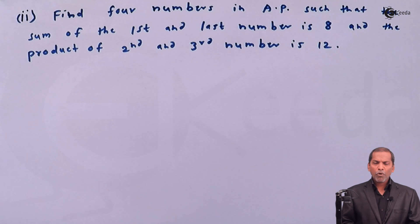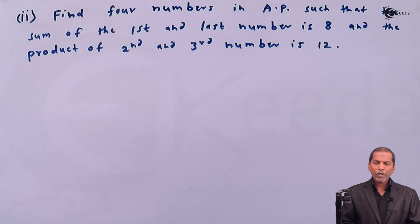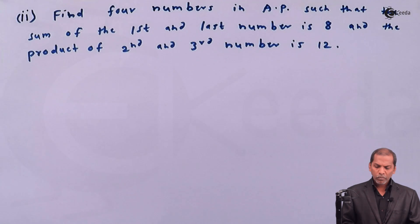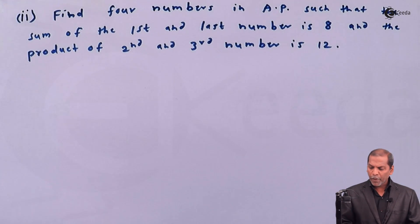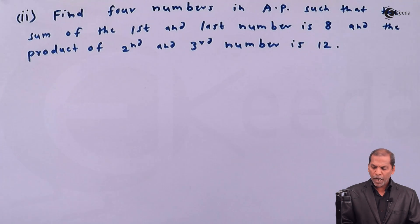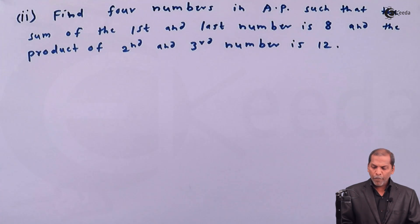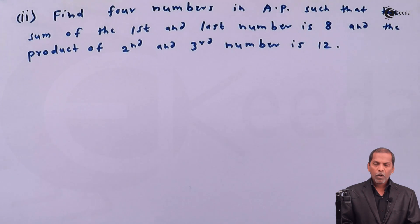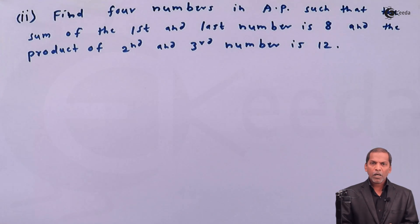Hello friends, now we see problem number 5, which is also based on sequence and series. The question is: find 4 numbers in AP such that the sum of the first and last number is 8 and the product of the second and third number is 12. Let's see the solution.